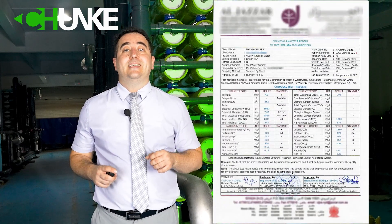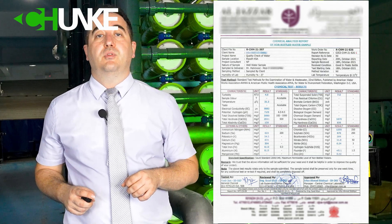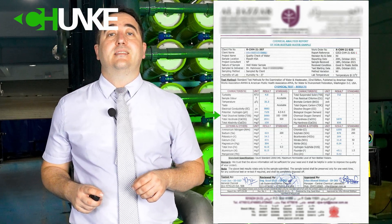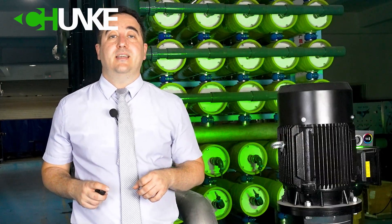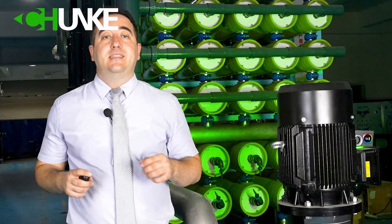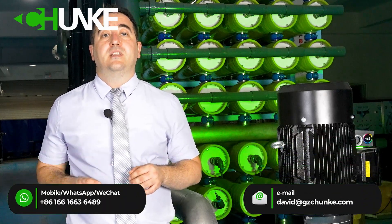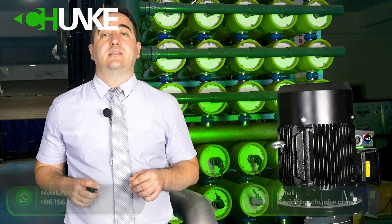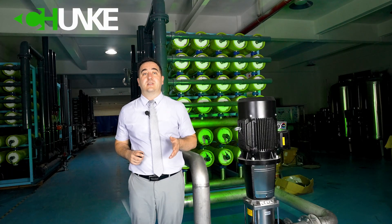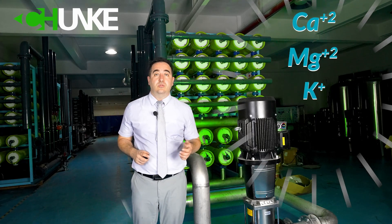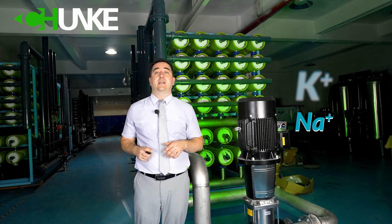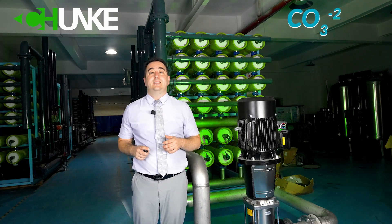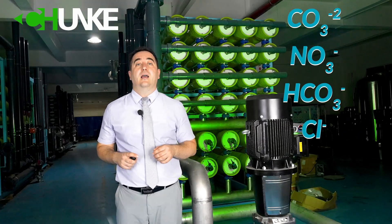First, we try to find TDS — total dissolved solids — in the test report. In this sample test report, TDS is 3580 ppm. TDS means total dissolved solids and refers to the total concentration of dissolved substances in water. TDS comprises inorganic salts and a small amount of organic matter. Inorganic salts are made of positively charged cations such as calcium, magnesium, potassium, and sodium, and negatively charged anions such as carbonates, nitrates, bicarbonates, chlorides, and sulfates.